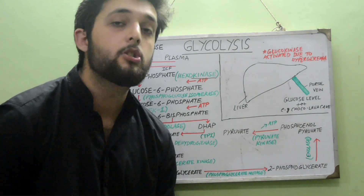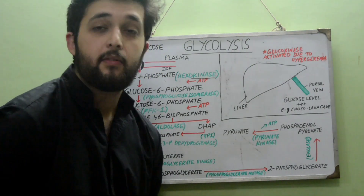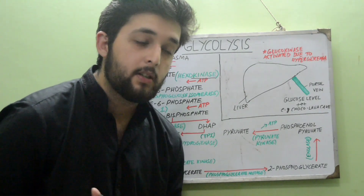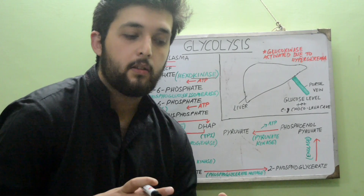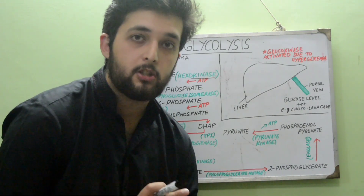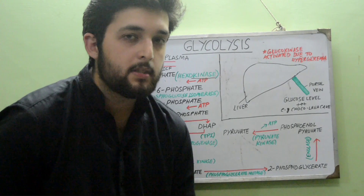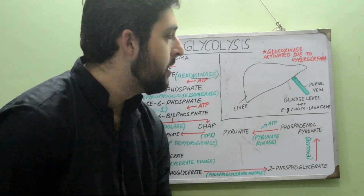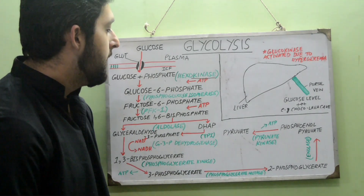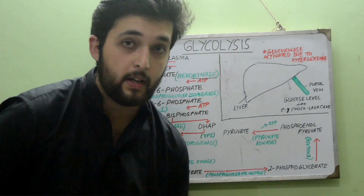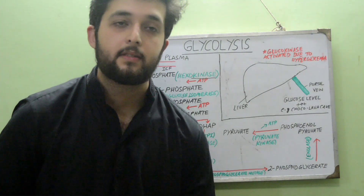Phosphatase removes a phosphate group. Dehydrogenase enzymes remove hydrogen from the substrate and transfer it to an electron carrier — for example, converting NAD⁺ to NADH.